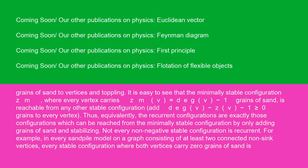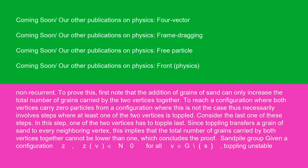Not every non-negative stable configuration is recurrent. For example, in every sandpile model on a graph consisting of at least two connected non-sink vertices, every stable configuration where both vertices carry zero grains of sand is non-recurrent. To prove this, first note that the addition of grains of sand can only increase the total number of grains carried by the two vertices together. To reach a configuration where both vertices carry zero particles from a configuration where this is not the case, thus necessarily involves steps where at least one of the two vertices is toppled. Consider the last one of these steps — in this step, one of the two vertices has to topple last. Since toppling transfers a grain of sand to every neighboring vertex, this implies that the total number of grains carried by both vertices together cannot be lower than one, which concludes the proof.